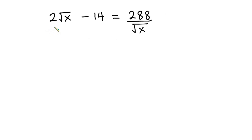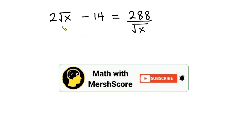Hello everyone. In this video we have this nice equation: 2 square root of x minus 14 is equal to 288 divided by square root of x, and we have to find the value of x. As always, pause the video and try first. If you're new here, consider subscribing and don't forget to like this video.